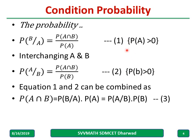From equations one and two combined, we can write: the probability of A and B is given by the probability of B given A into the probability of A, or the probability of A given B into the probability of B.